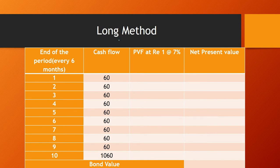In the long method, instead of years we write 'end of period', where one period equals six months. With a five-year bond there are 10 periods. The cash flow is Rs. 60 for periods 1 through 9, and Rs. 1060 for period 10, since at maturity we receive Rs. 60 interest plus Rs. 1000 maturity value.